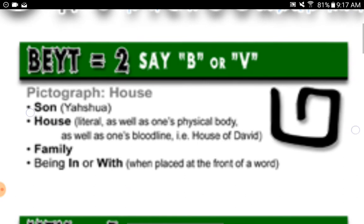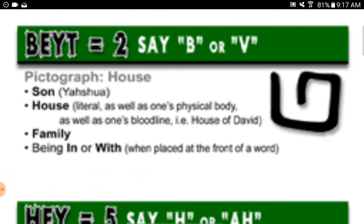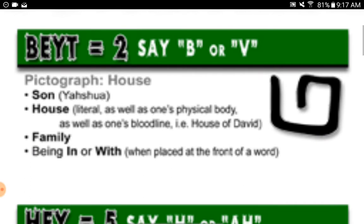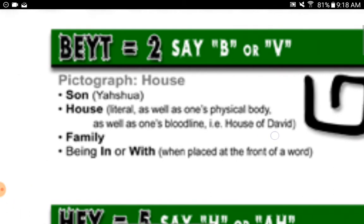Bet equals two, say 'b' or 'v.' Pictograph: house. Son, Yahusha — house, literal as well as one's physical body, as well as one's bloodline — that is, house of Dawid. Family, being in or with when placed at the front of a word.